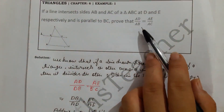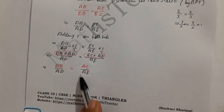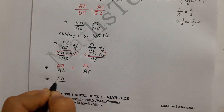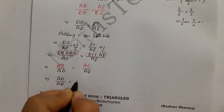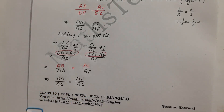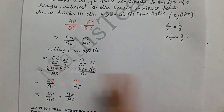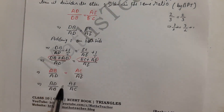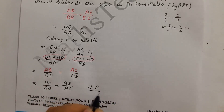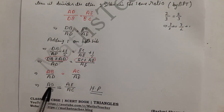Now AD is our denominator and AE is our denominator, but we need AD and AE as numerators. So we reciprocate again. We have to manage the equal sign carefully — if one side is changed and the other is not, that will be wrong. So we reciprocate both sides: AD upon AB equals AE upon AC. This is our proof — just reciprocate, add 1, and reciprocate again, and our answer comes.